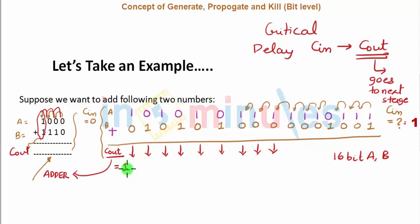It's very straightforward and that is nothing but the concept of generate, propagate, and kill signal, where each and every bit doesn't have to wait for their respective C ins and we can still predict the C out. And how do we do this? Let's see.